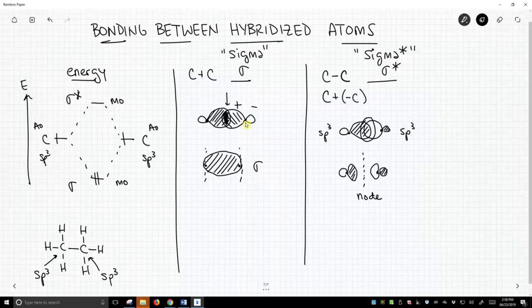What we see is we have a node in between. That means the probability of finding the electron between the two nuclei is much lower, and therefore it's a high energy orbital. It's our sigma star, and you can see in our energy diagram, we showed that is indeed a high energy orbital. The electrons don't want to go there, and that's why they end up going to the sigma only.